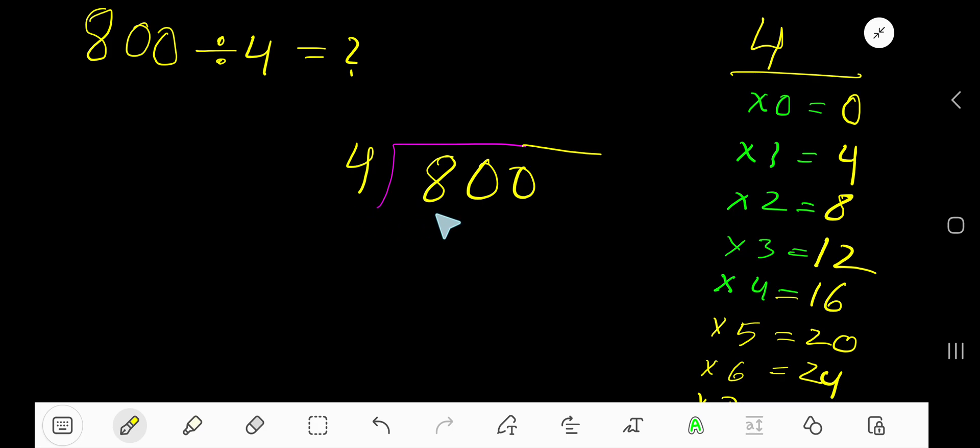Okay, 4 goes into 8 how many times? 4 goes into 8 2 times, right? 2, 2 times 4, 8. Subtract you are getting 0.